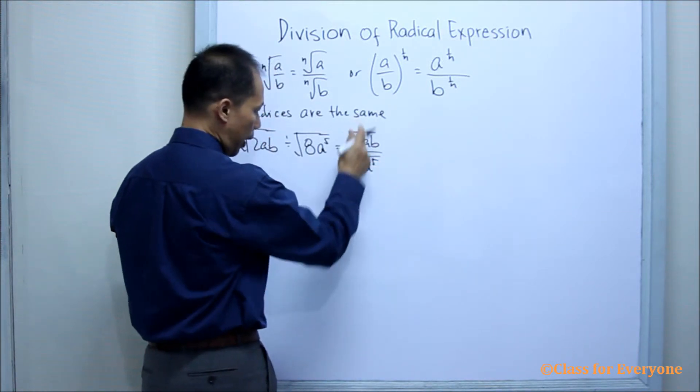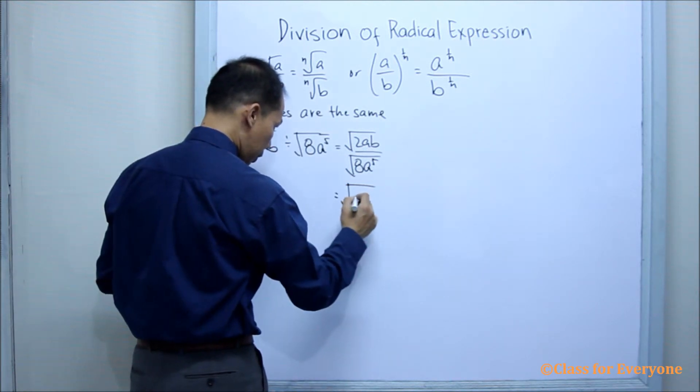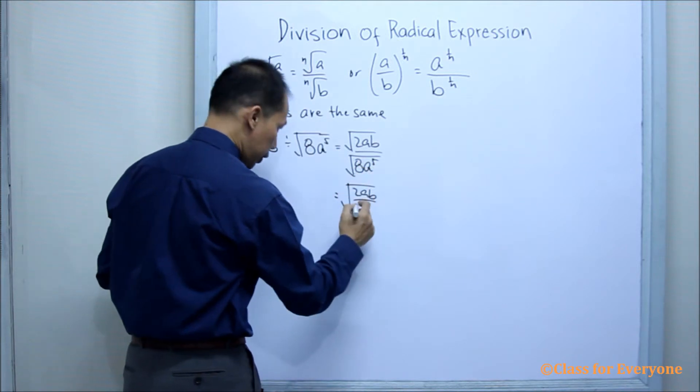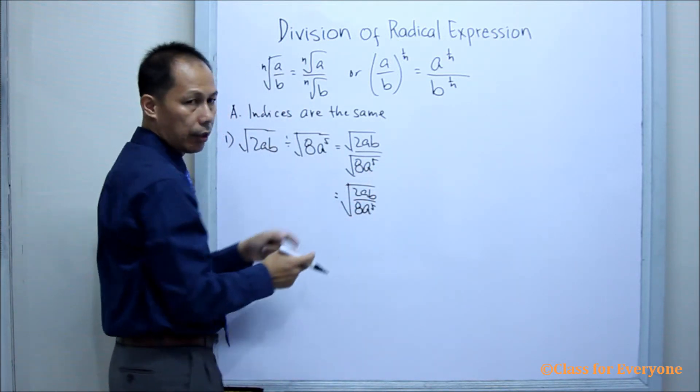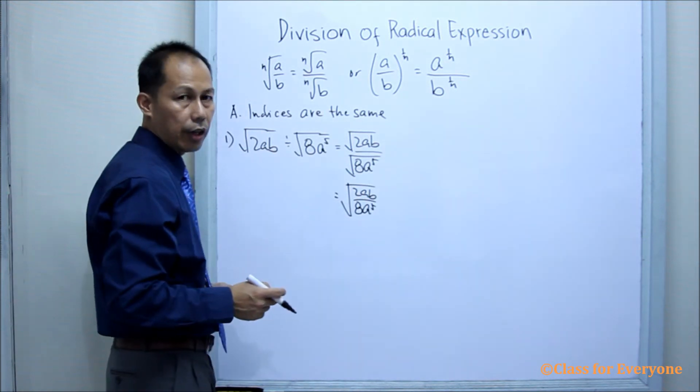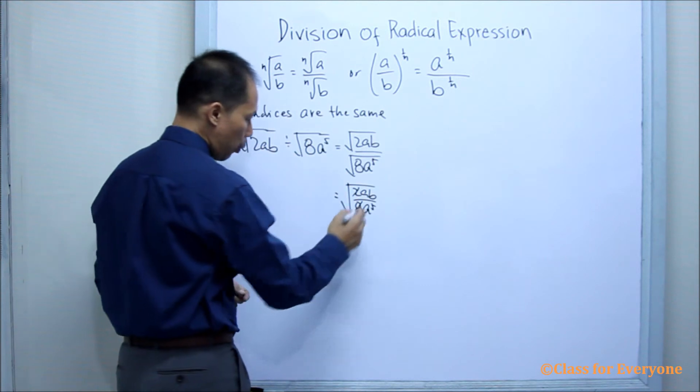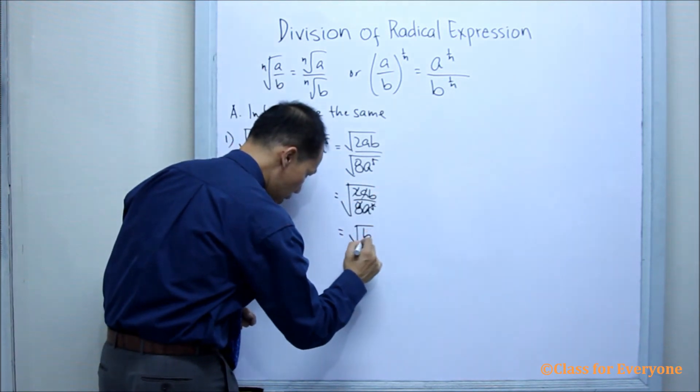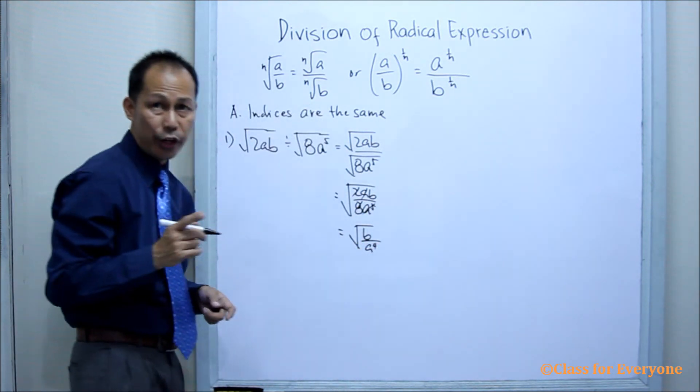Now, we are writing it into a single radical. We have the square root of 2ab over 8a to the 5th. Since it's already under a single radical sign, we can divide this out, giving us only the square root of b over 4a to the 4th.